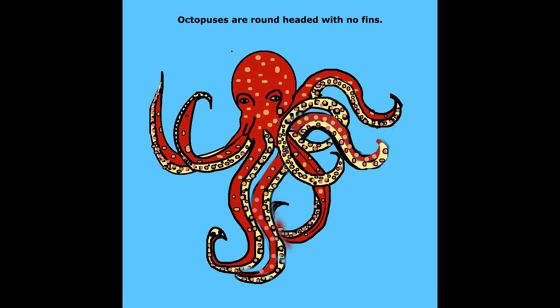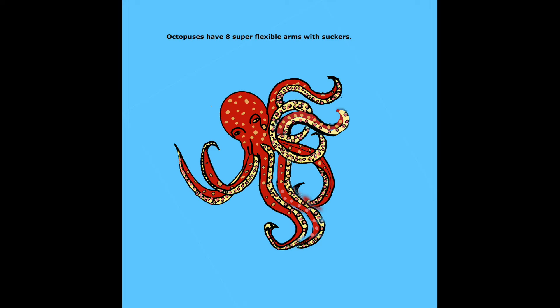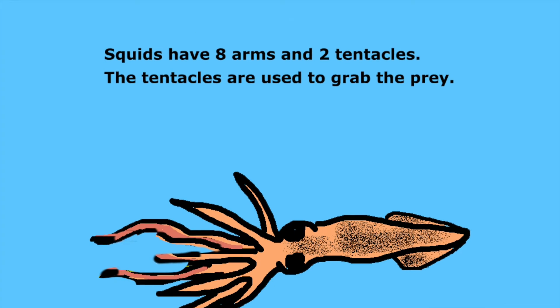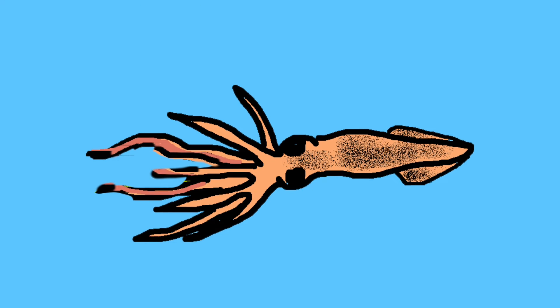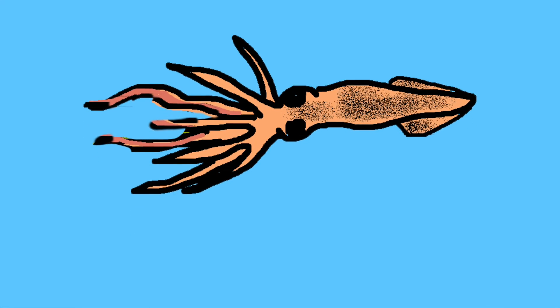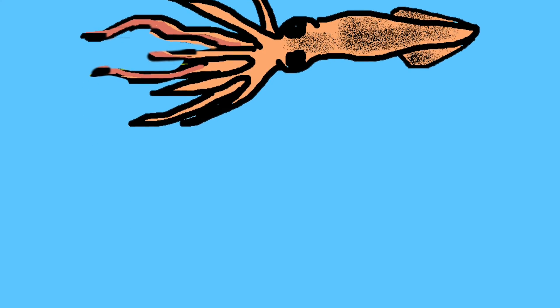Octopuses are round-headed with no fins. Squids have a triangular head with two fins. Octopuses have eight super-flexible arms with suckers. Squids have eight arms and two tentacles. The tentacles are used to grab their prey.